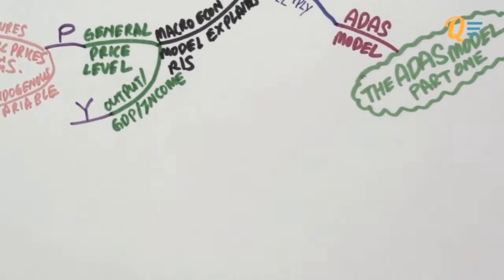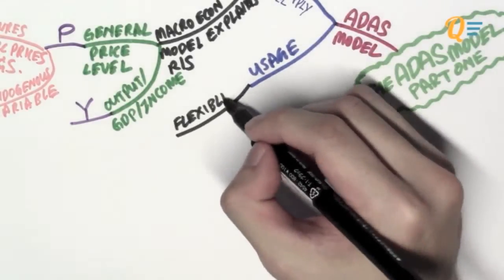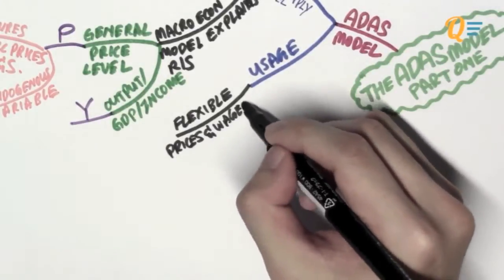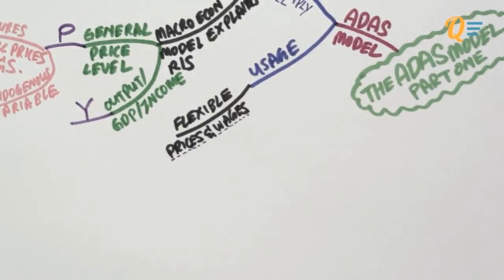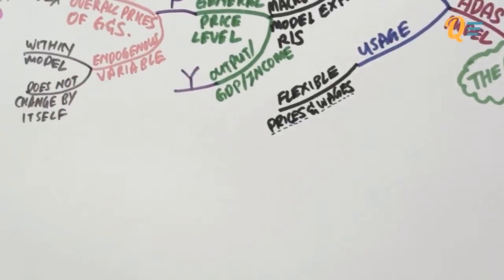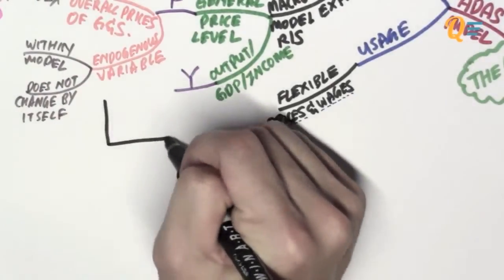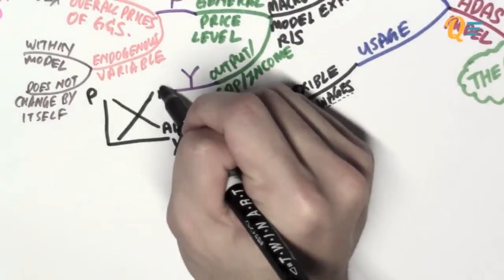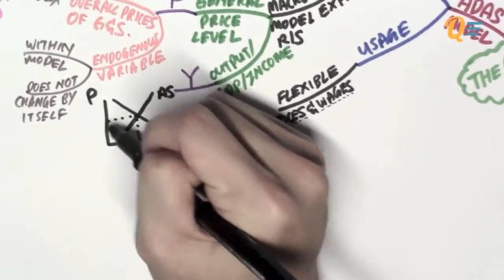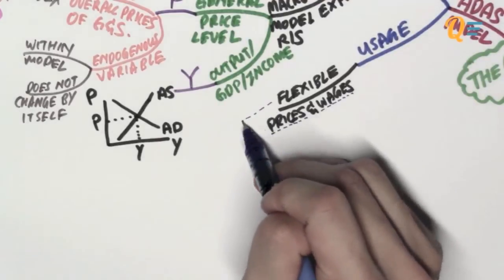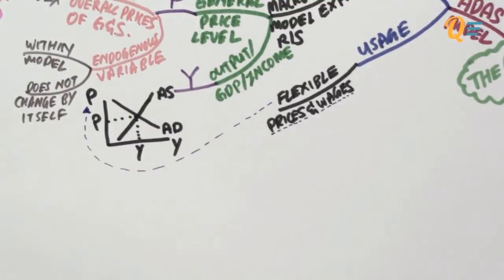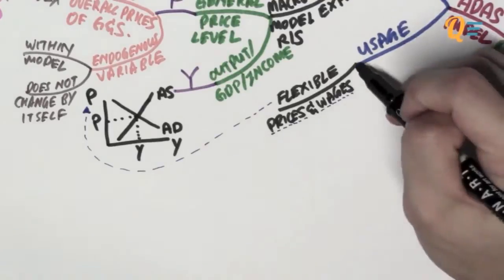A really good question to ask is: when do we use the ADES model? Number one, we use the ADES model when the economy has flexible prices and wages. One important point to remember is that wages are not as flexible as prices — I will explain this later in the video. We use the ADES model when there are flexible prices and wages because the ADES model has the price level on the vertical axis, so you need to analyze how prices change given certain scenarios.